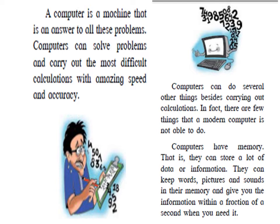Computers also have memory — that is, they can store a lot of data or information. Data means information. They can keep words, pictures, and sounds in their memory and give you the information within a fraction of a second when you need it. You can type in a search bar and search for any information stored in your computer, or use the internet to get any piece of information. The topic you type in the search bar will display results within a fraction of a second.